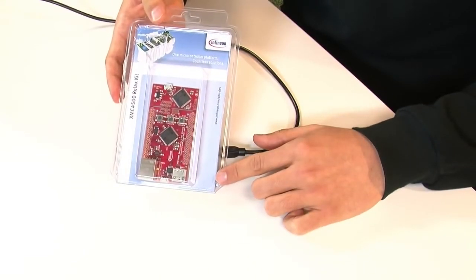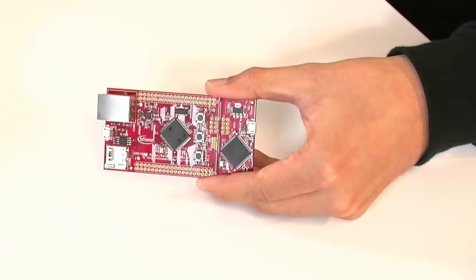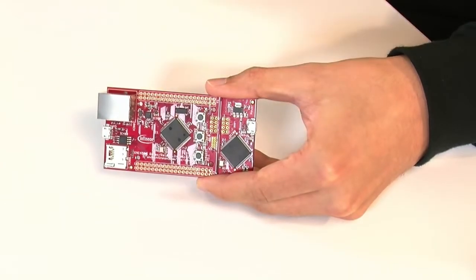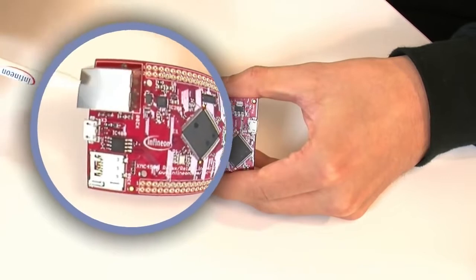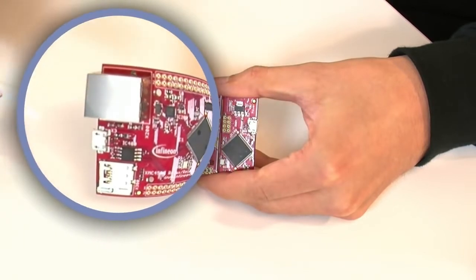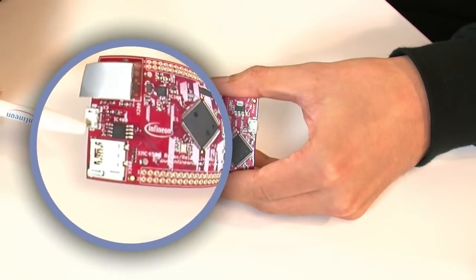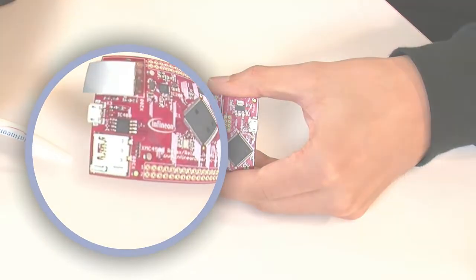The XMC 4500 relax kit. Additionally to the relax light kit features, this kit has a real-time clock crystal, Ethernet PHY and jack, a quad-SPI flash from Spansion and a micro-SD card slot.